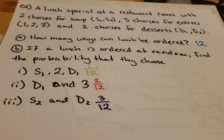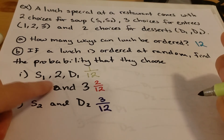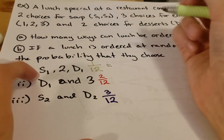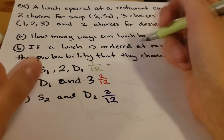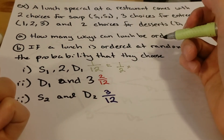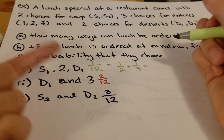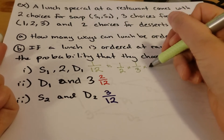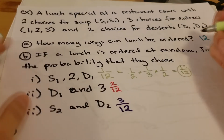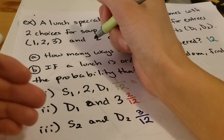If we're looking for the probability that, ordering a lunch at random, they chose the first soup, the second entree, and the first dessert, we got one over 12 using the tree diagram. Another way to find that: the probability of ordering the first soup is one half, the probability of ordering the second entree is one third, and the probability of ordering the first dessert is one half. If we multiply all of these out, we get one over 12. We can think of these as independent events — they are separate, unrelated categories.